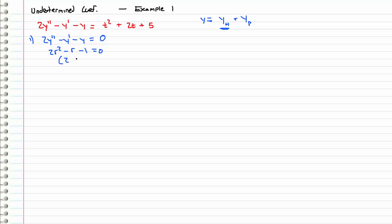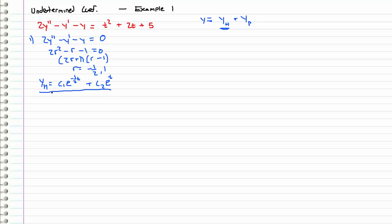We are pros at solving this now, so let's go straight into the characteristic equation. And this factors beautifully. We have a minus one and a plus one, so we have real roots: negative one half and one. That means the general form for our homogeneous solution yh is equal to c1 times e to the negative one half t, plus c2 e to the t. So that is step one: finding the homogeneous solution.